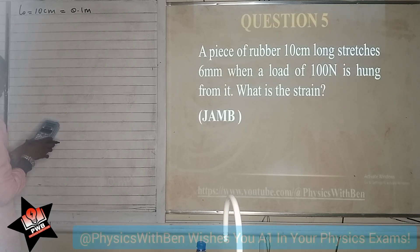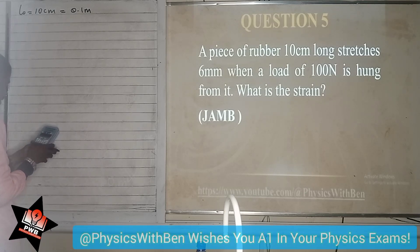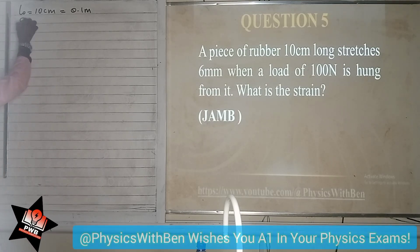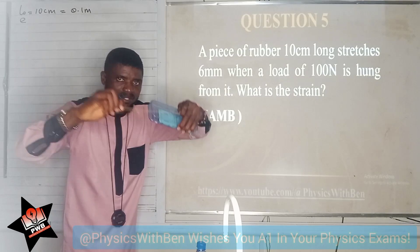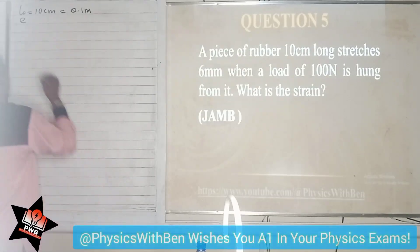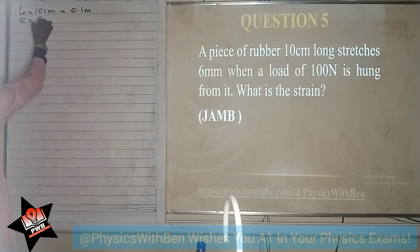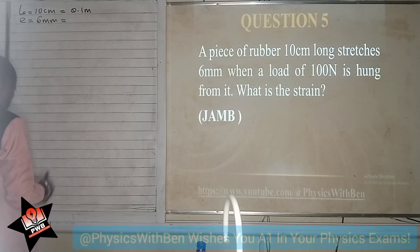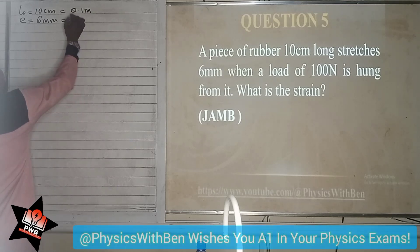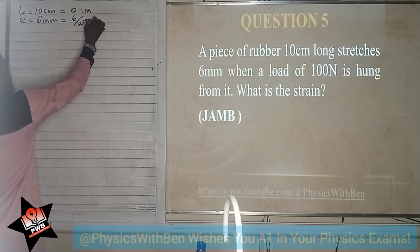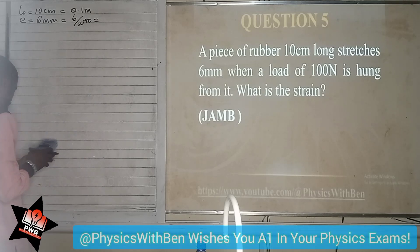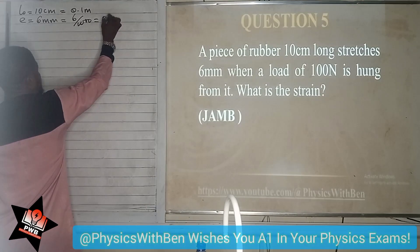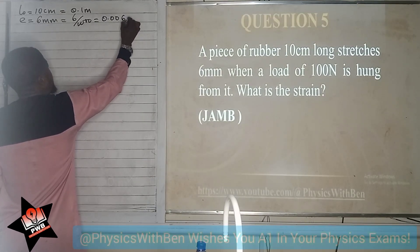Let me verify that: 10 divided by 100 — yes, I'm correct. And so the extension E is given to be 6mm. But we are going to convert these millimeters to meters. So we write that this is 6 divided by 1,000, and that is the same thing as 0.006 meters.